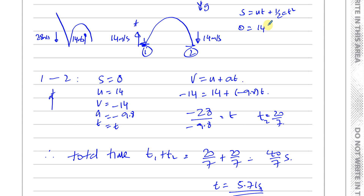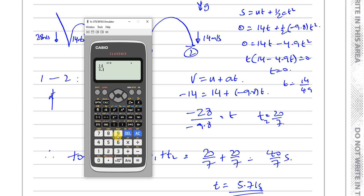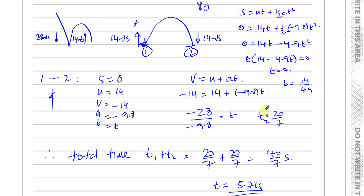Using S = UT + ½AT² with S = 0, U = 14, and A = −9.8, we get 0 = 14T − 4.9T². Taking T as a common factor: T(14 − 4.9T) = 0. So T = 0, which is when it left the ground, or T = 14/4.9 = 20/7 — exactly the same answer. It doesn't matter which formula you use; you get the answer required.